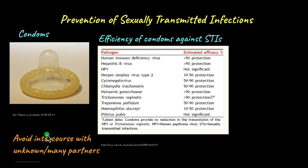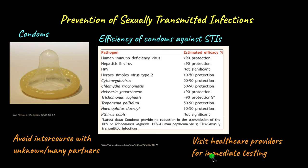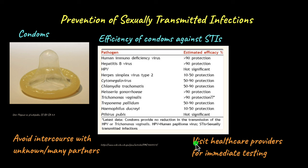Apart from using condoms, other methods to prevent STI transmission include avoiding intercourse with multiple or unknown partners, and visiting healthcare providers for immediate testing if you or anyone around you experiences any of the symptoms mentioned. It is very important to get tested as early as possible, since many STIs don't present symptoms immediately, and in the meantime the disease could be spreading unknowingly. Early testing allows treatment to begin sooner and prevents further spread.